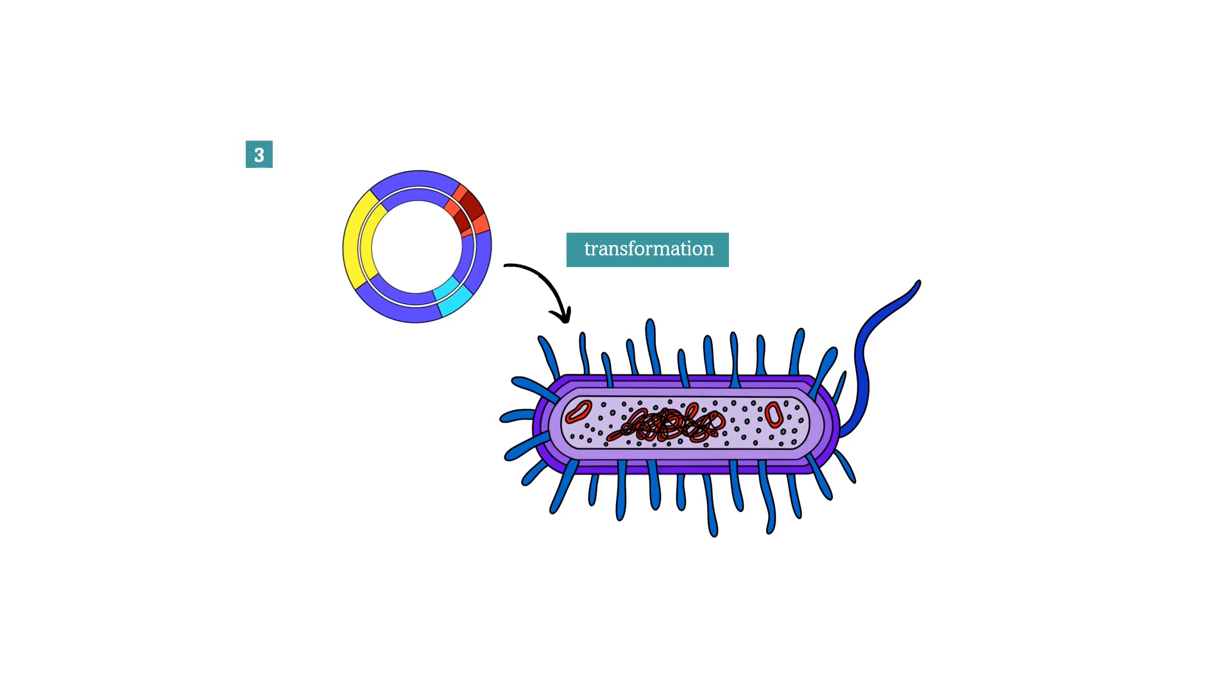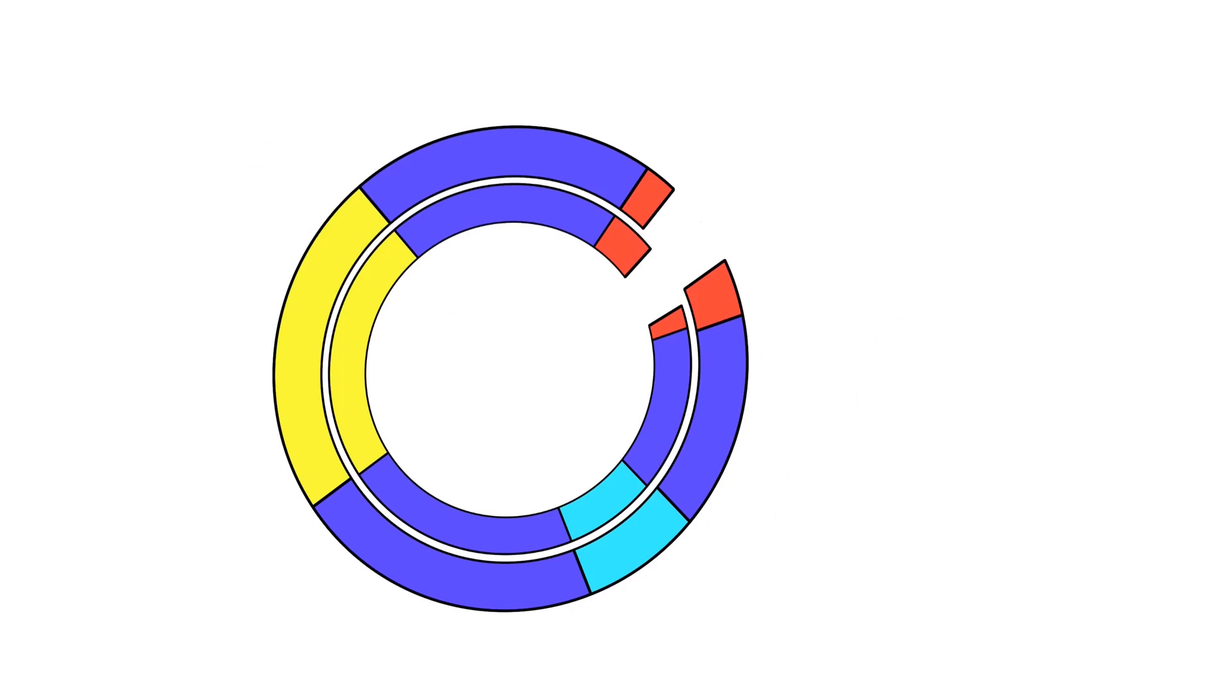The problem with bacterial plasmids is that they are really small and for that reason they can only accept DNA fragments up to about 25 kilobases in size. And therefore, we sometimes need to use other vectors that can accept longer DNA fragments.